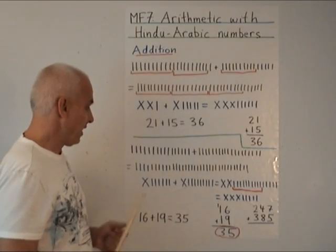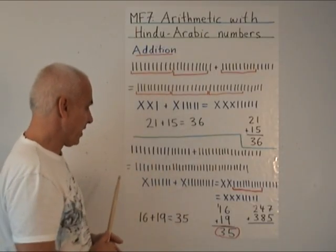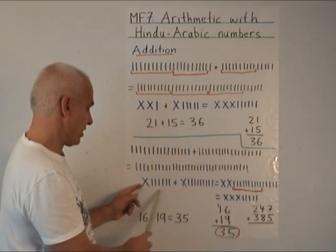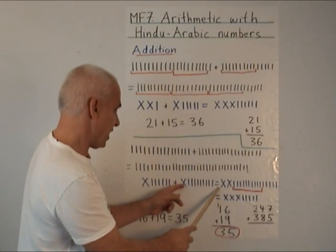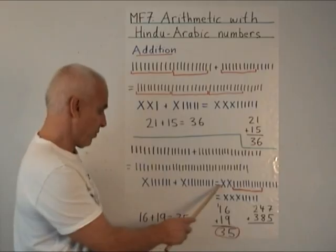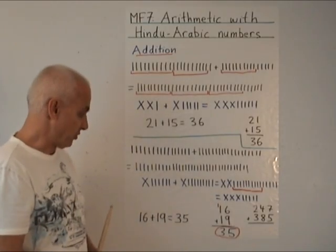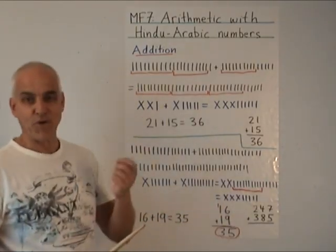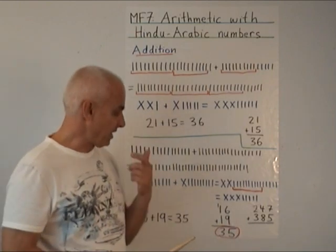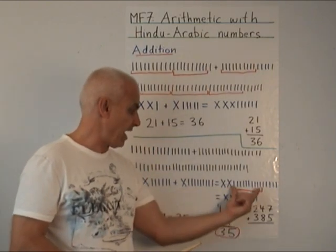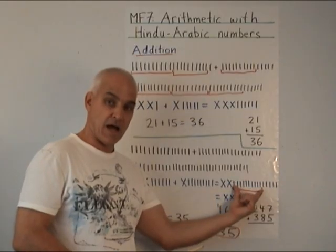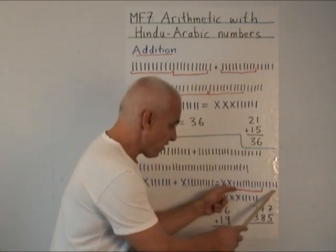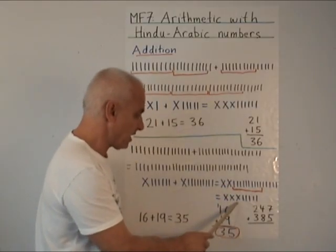So it gets a little bit more complicated if we have bigger numbers. So here is another example, which turns out to be this 16 plus 19. In Roman numerals, we put them together, we get two Xs, two tens, and then we have a string of 1s. But we have agreed with the Roman numeral notation that we're not going to allow 10 or more strings. Whenever we have 10 or more of a certain kind, we exchange it for a higher denomination.